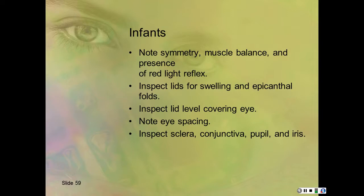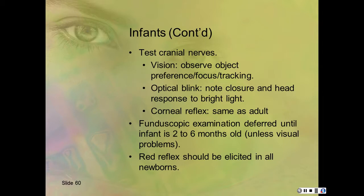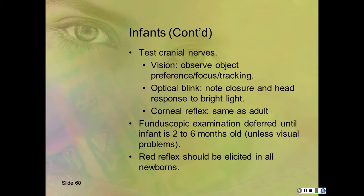On an infant: look at symmetry, muscle balance, and presence of the light reflex. Inspect lids for swelling and look at the epicanthal folds. Inspect eyelid levels, note eye spacing, and inspect the sclera, conjunctiva, pupil, and iris. Test cranial nerves and vision by observing response to objects and testing for an optical blink reflex—note closure and head response to a bright light. The corneal reflex is the same as in an adult. The fundoscopic examination is deferred until the infant is two to six months old unless there are visual problems; usually all you need is a red reflex in newborns.